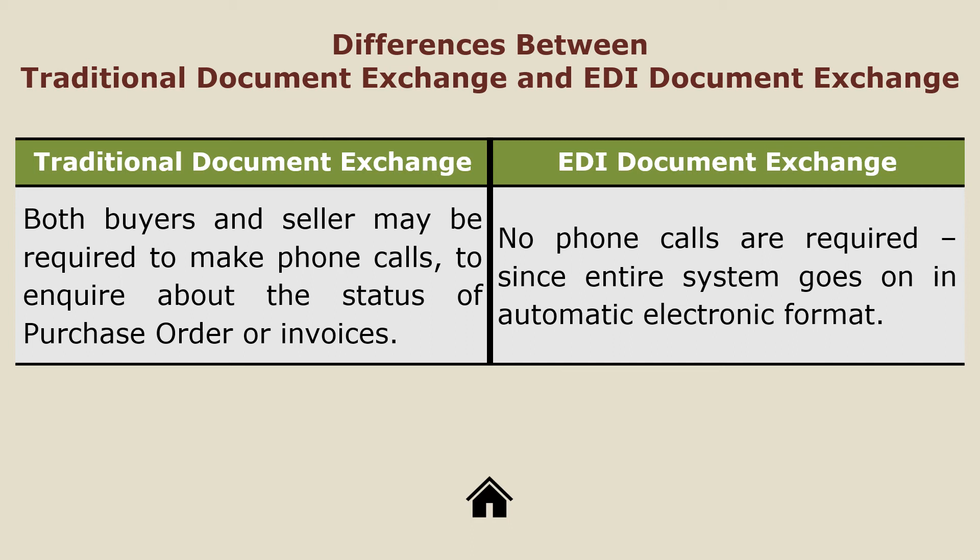A third difference is that in traditional document exchange, buyers and sellers may need to make phone calls or inquiries to check on the status of purchase orders or invoices, since documents sent by post or courier can be lost or delayed. In EDI document exchange, no such phone calls or inquiries are required at all.